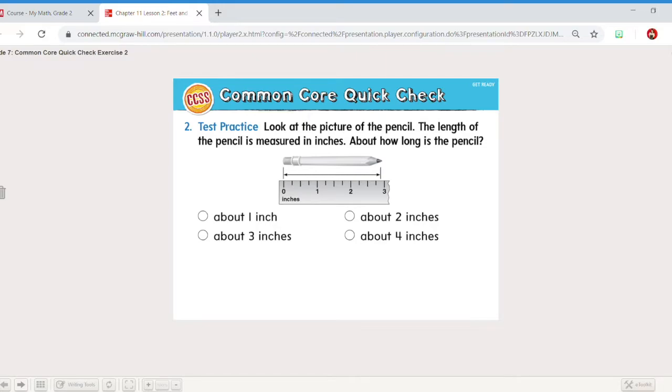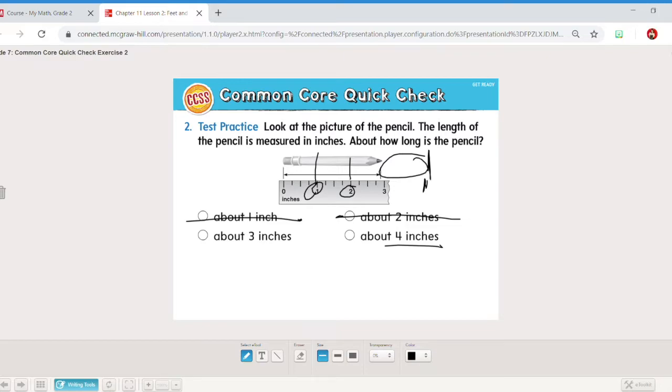Look at the picture of the pencil. The length of the pencil is measured in inches. How long is this pencil? Well we start at zero with the end of the object and we measure by counting the numbers to the other end of the object. We're going to count and it says about for each of them because it's not exactly on that three mark but it's really close to it. So is it about one inch? Well if I look at one that's just part of the pencil. About two inches, again just part of the pencil. Four inches? Well four would come over here and that part of the pencil doesn't exist. Let's see three inches. About three inches means it's almost there and our pencil lines up to it. I'd say about three inches.